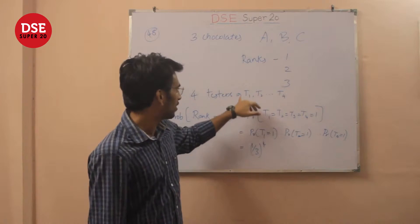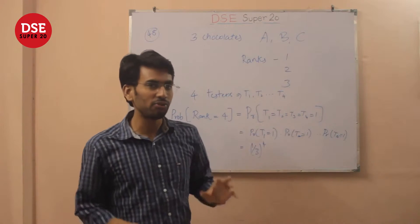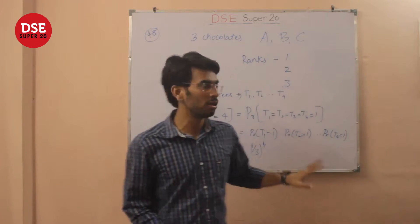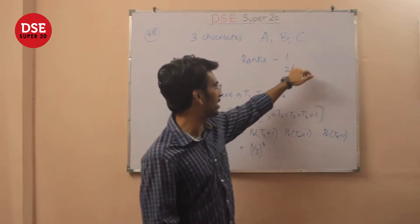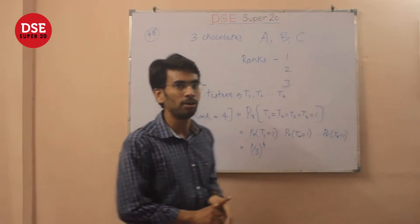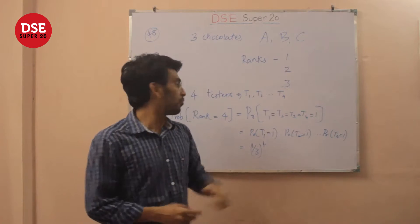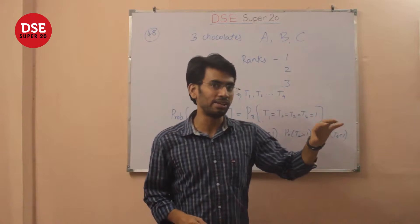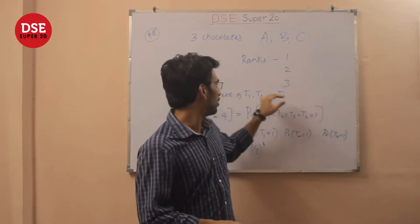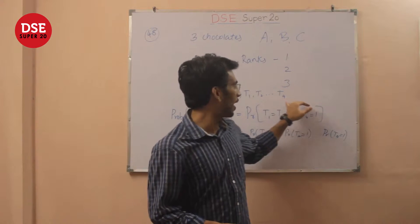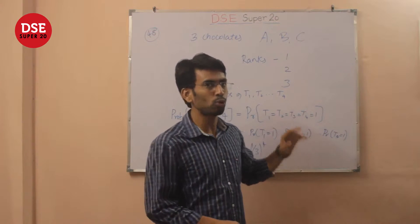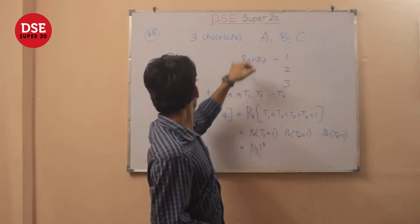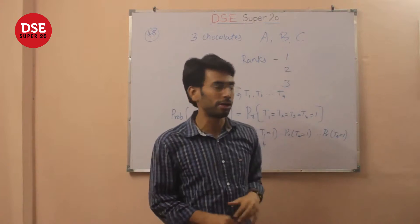But the tester can't really distinguish between the tastes of these chocolates, therefore it's assigning the rank randomly. And once all four testers have assigned the rank, all the ranks are summed up to assign a particular rank to a given chocolate.